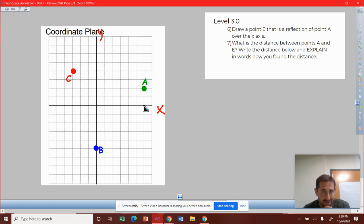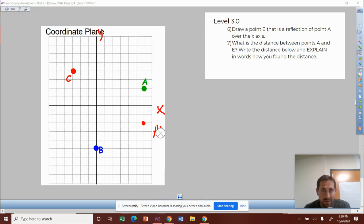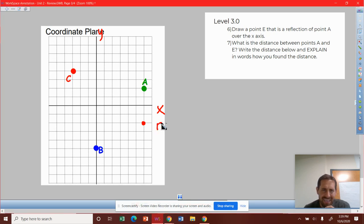So it's two away here. So we're going to go two away from the x-axis. And we technically call this A prime, but they asked us to call that E. So we're going to call it E.